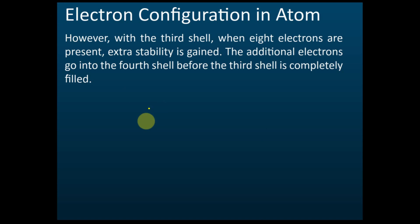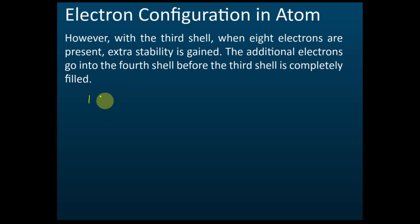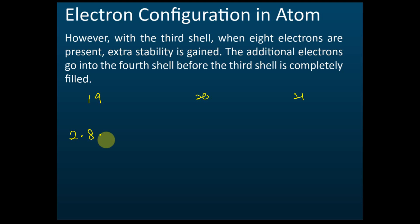Let's say an atom has 19 electrons, or 20 electrons, or 21 electrons. The first shell holds two electrons, the second shell holds eight electrons — giving 10 total. Then the third shell holds eight electrons, giving a total of 18. But we have 19 electrons here.